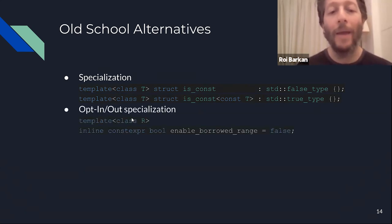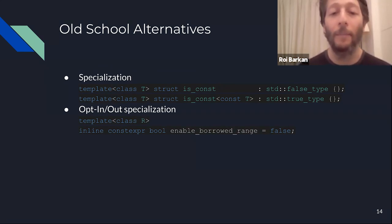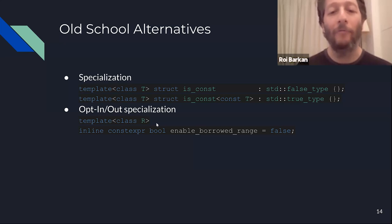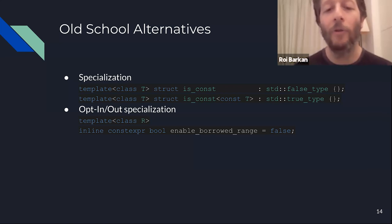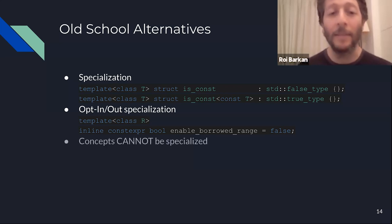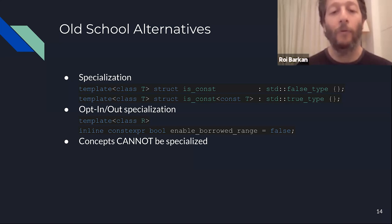Another way to use specialization is for opt-in or opt-out. I can define a Boolean for every type, defaulting to false, and anyone who wants to opt in can do a specialization and convert the Boolean to true for their specific type. This is very common and useful in C++ before C++20, and it's still useful now.